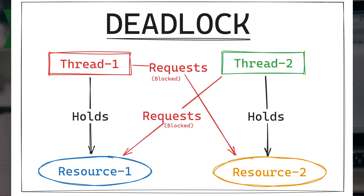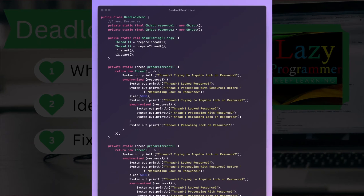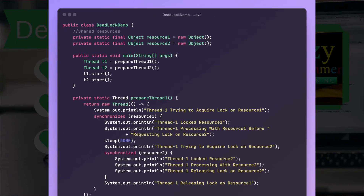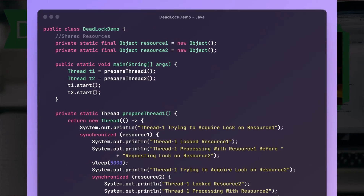So this is the situation where both of these threads will not be able to proceed further in the execution — they will be stuck there forever. Now let us see a complete code example where a deadlock will occur.